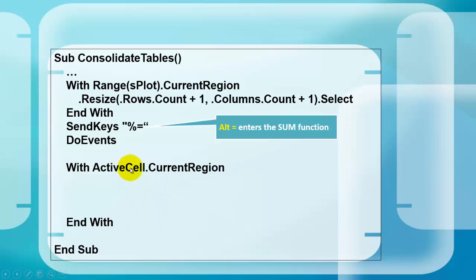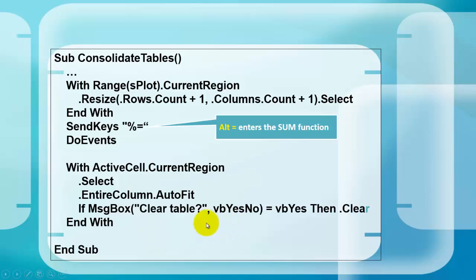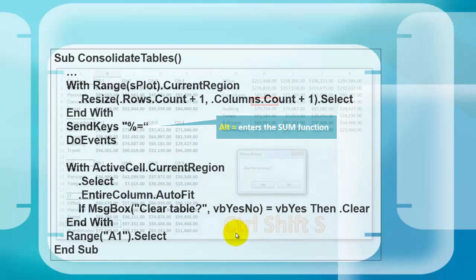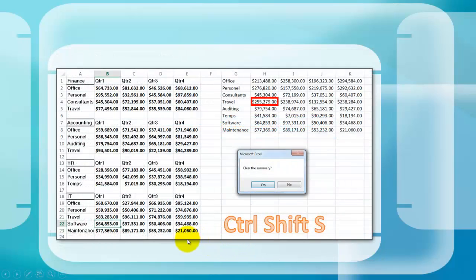Then we take the active cell current region. Again, we select it. We auto fit the entire column in there. And we ask through a message box, do you want to clear the table? If so, dot clear. That means clear the current region of the active cell. And select range A1 to go back to the first cell on the sheet.